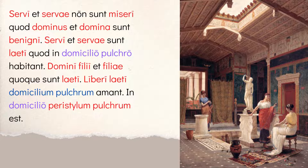Then: servi et servae sunt laeti, quod in domicilio pulcro habitant. The slaves and slave women are happy — laeti is masculine nominative plural because you have more than one person and one is masculine. They're happy because they live in a domicilio, a house described as pulcro — beautiful. Notice the endings match: domicilio pulcro are both ablative singular neuter. So they're happy to live in a beautiful house.